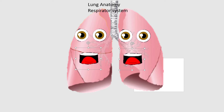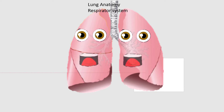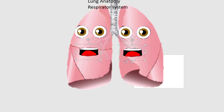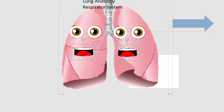The lungs are part of the respiratory system. Let's see the parts of a lung. The principal bronchia are shown here. Another part is the trachea, and the lungs have three parts.